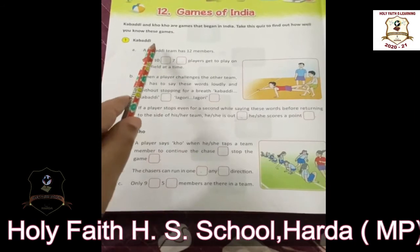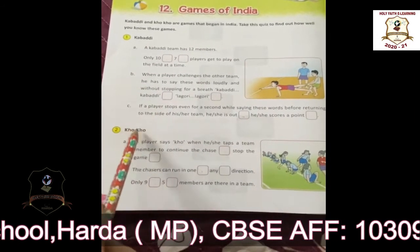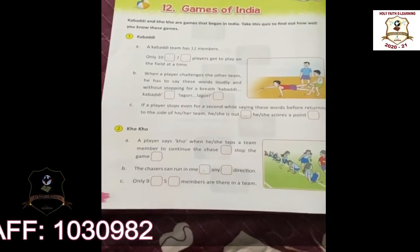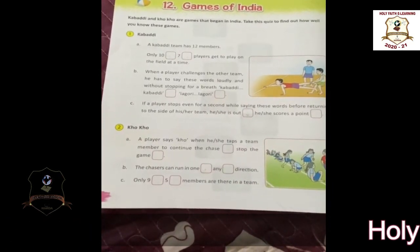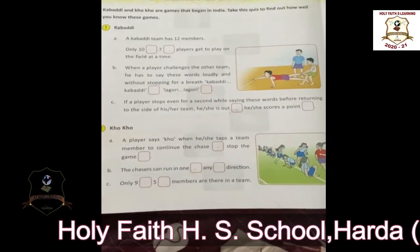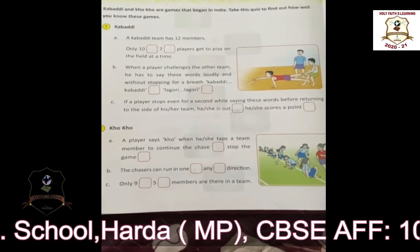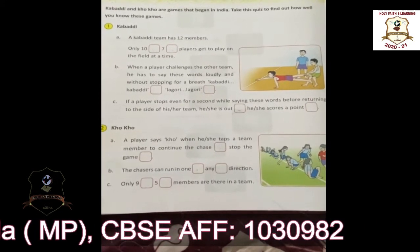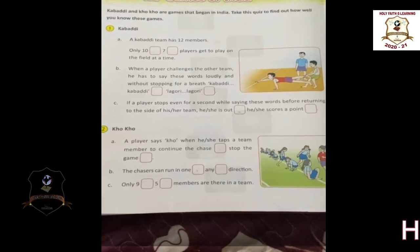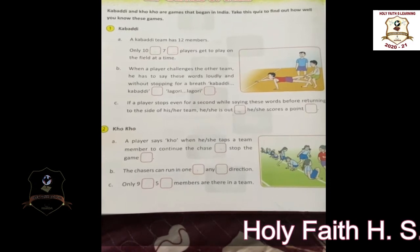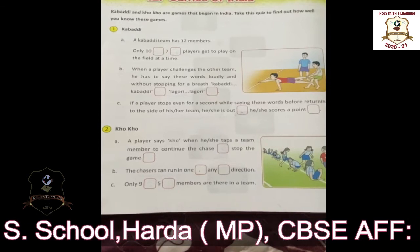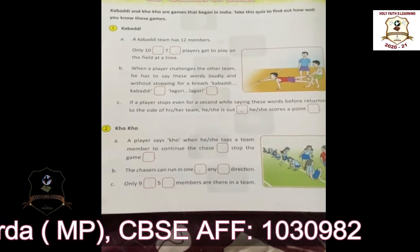I hope you understood about Kabaddi. Now next we will learn about Kho Kho. See, the girls here are playing Kho Kho. Kho Kho was first invented in Maharashtra. There are maximum 12 players in a team, but only 9 players are allowed to play on the ground.